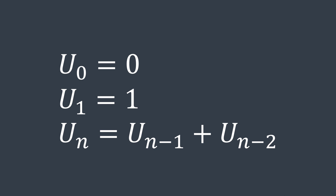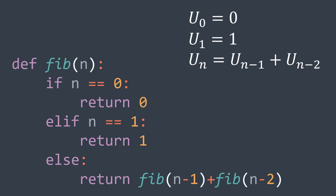So we can write this recursive function to calculate fib(n). If n is 0, then the value is 0. Else if n is 1, then the value is 1. Otherwise, it is the sum of fib(n-1) and fib(n-2), so we return fib(n-1) plus fib(n-2).